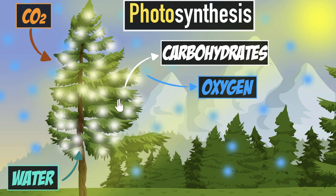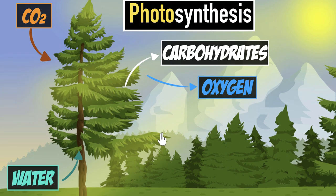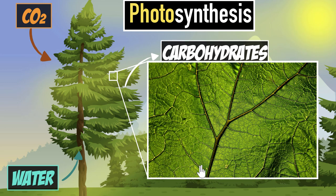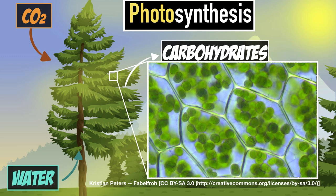What do plants and trees have that we don't? It turns out they have something called chlorophyll. To answer that question, let's look at one of these leaves very carefully. If we zoom in, we will see a leaf. But if we zoom in even further, maybe using a microscope, now we see something very interesting.